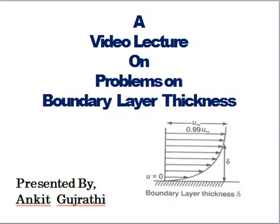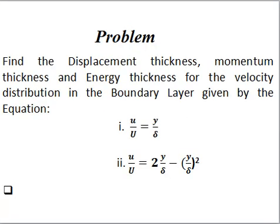Here we know the freestream velocity is capital U and the total nominal thickness of the boundary layer is δ. We consider any distance y, and at that point the velocity is small u. So the ratio u/U equals y/δ in the first problem. In the second problem, the ratio u/U is 2(y/δ) minus (y/δ)². We will proceed with the solution of the first problem.